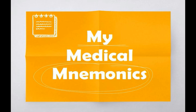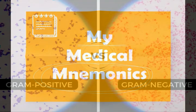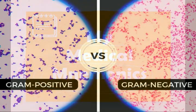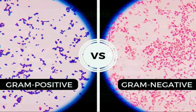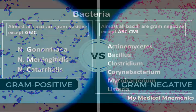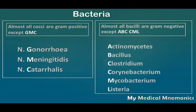Bacteria is divided into two parts: gram positive and gram negative, on the basis of gram staining. If it retains the color and it is purple in color, it is gram positive. If it is not retaining the color and is pink or red in color, then it is gram negative.